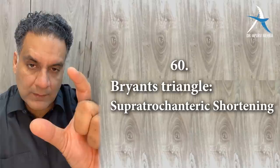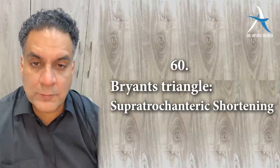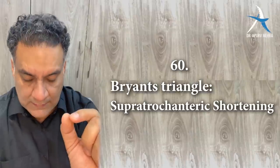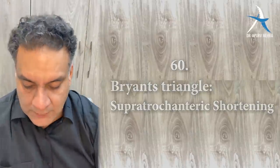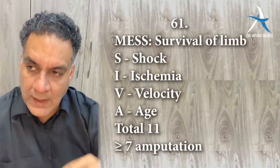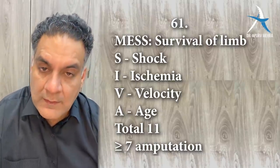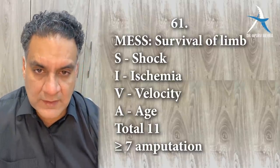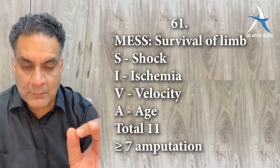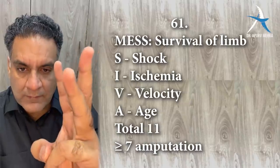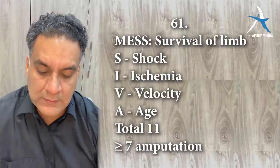Point number sixty: remember the triangle above the trochanter called the supratrochanteric shortening triangle — Bryan's triangle. If there's a crushing injury involving a limb, calculate the MESS score — Mangled Extremities Severity Score. The mnemonic is SHIVA: Shock, Hemorrhage (ischemia), Impact velocity of trauma, and Age of patient.